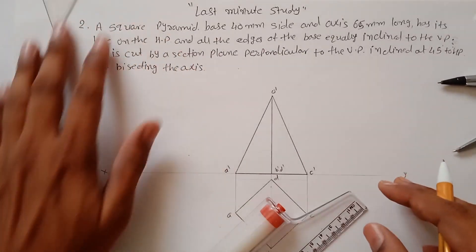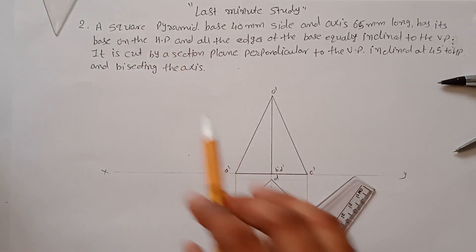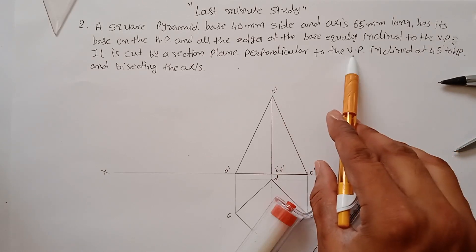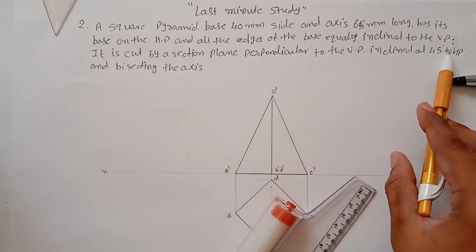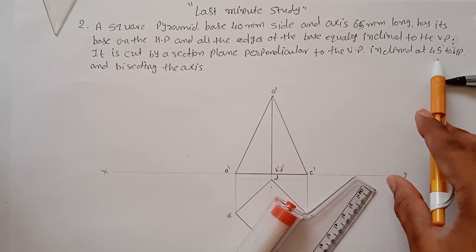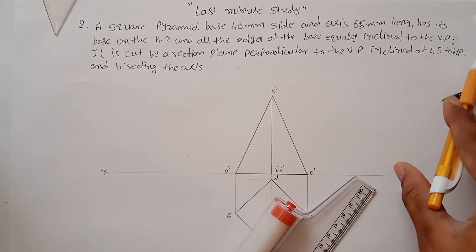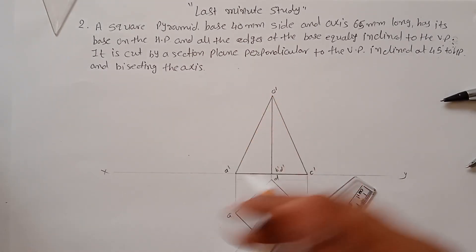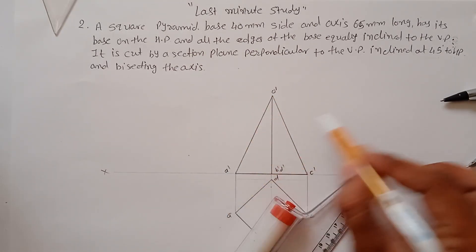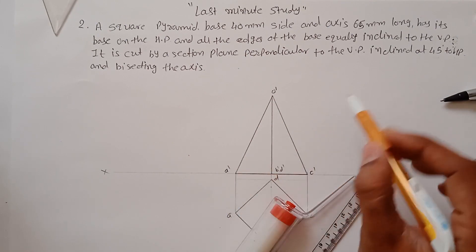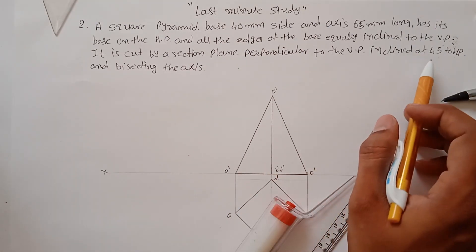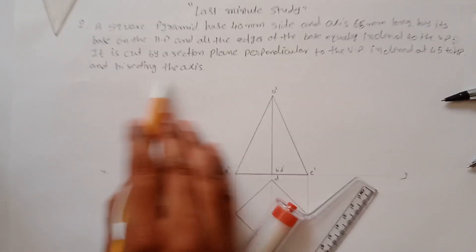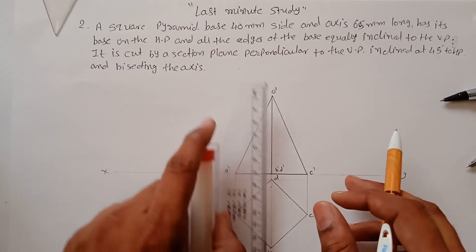Now find the sectional plane. The solid is cut by a section plane perpendicular to VP and inclined at 45 degrees to HP. When the plane is inclined to HP, the sectional line is observed in the front view. Find the position of the section line — it is at 45 degrees and bisects the axis.